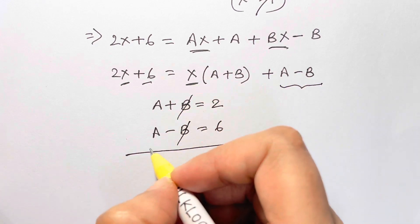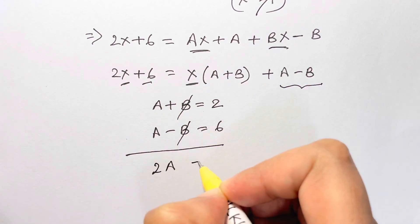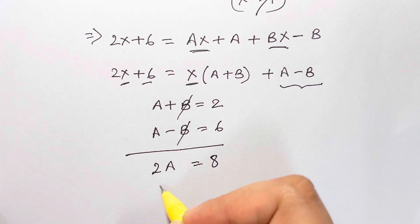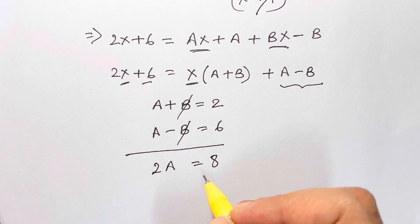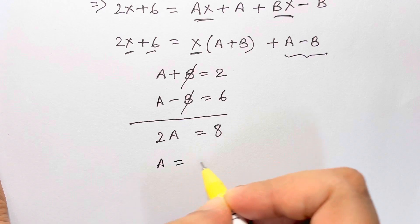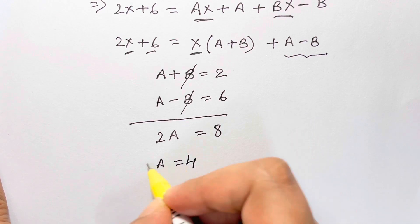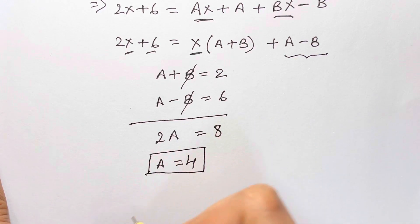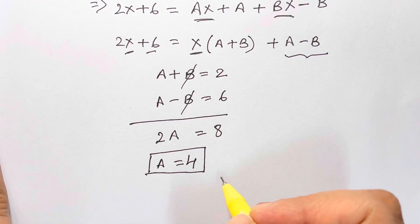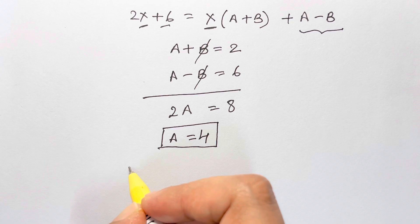Now I have two equations. How to solve for that? Use elimination method. B and B gets cancelled, A plus A is 2A is equal to 6 plus 2 is 8. So I've got 2A equals to 8, so A is equal to 8 divided by 2, that's 4. So I've got the value of A.